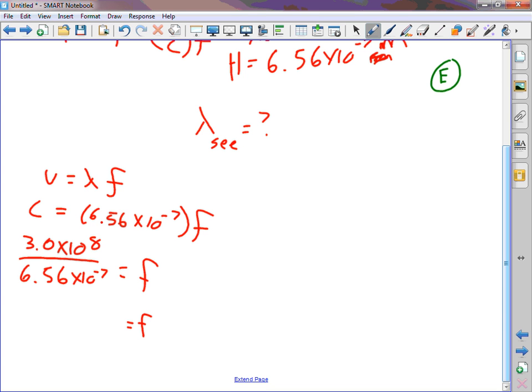So, this is going to be 3.0 times 10 to the 8 divided by 6.56 times 10 to the negative 7 equals f. What is this frequency? We know here on Earth at rest from our perspective what the wavelength of hydrogen is supposed to be. It occurs because the electron is dropping down energy levels. Hydrogen atom emits light. We measure the wavelength of that light and find the strongest wavelength at 656 nanometers. That means this thing is emitting a frequency of what?